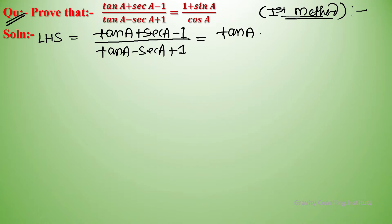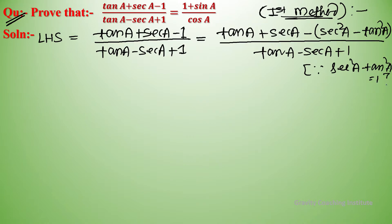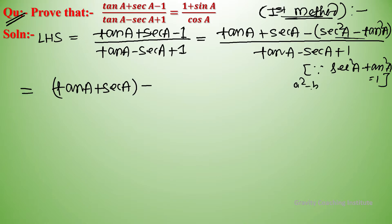In the numerator, we rewrite 1 as sec² A minus tan² A, since sec² A minus tan² A equals 1. So the numerator becomes tan A plus sec A minus (sec² A minus tan² A). We then use the identity a² minus b² equals a plus b into a minus b.